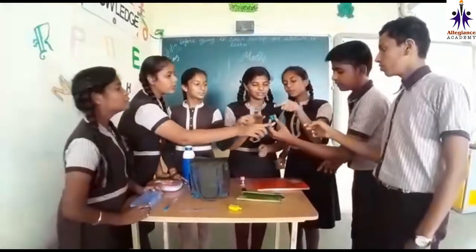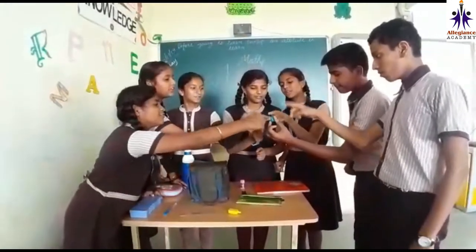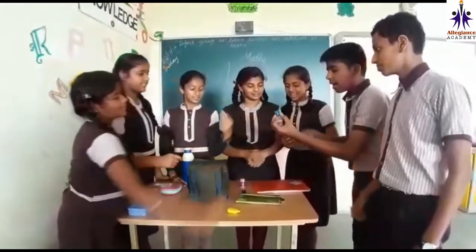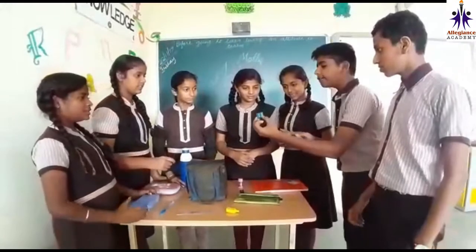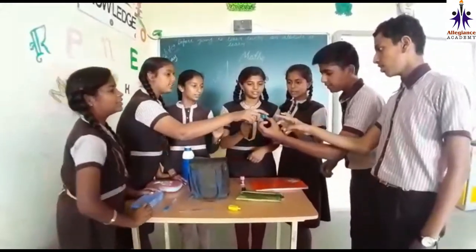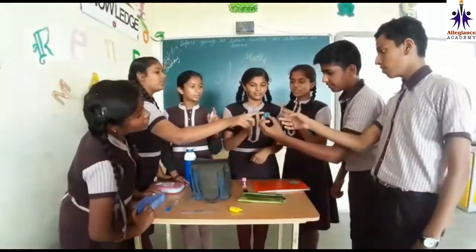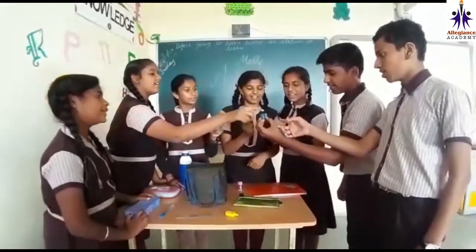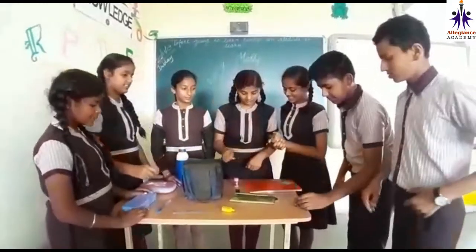One, two, three, four, five, six. And it has eight vertices. One, two, three, four, five, six, seven, eight. Look.